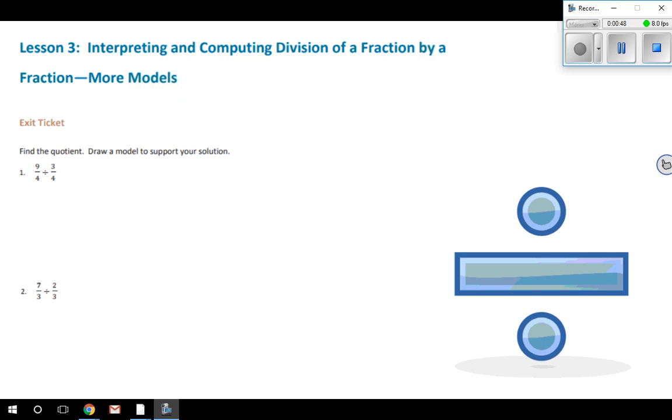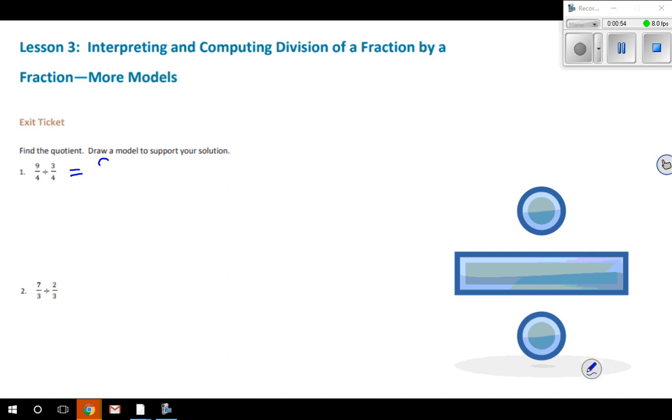I can show you that a couple different ways. We can take this division problem and rewrite it with multiplication by doing 9 fourths, change division to multiplication, and do the opposite by flipping the second part. So dividing by 3 fourths would be the same as multiplying by 4 thirds.